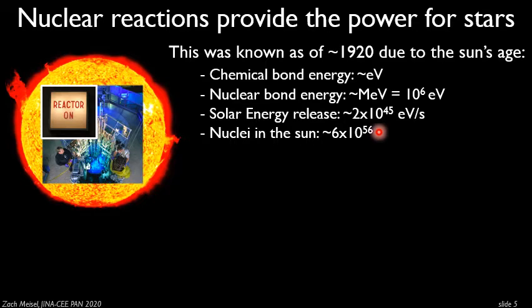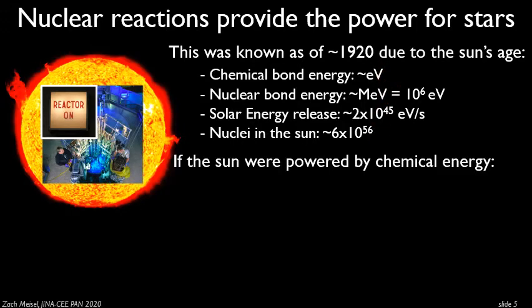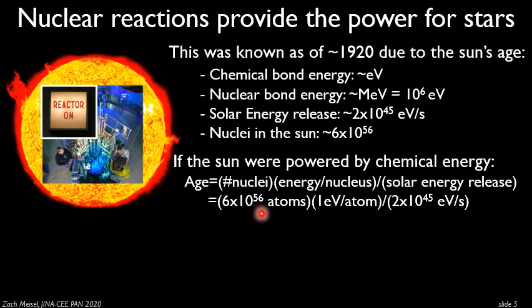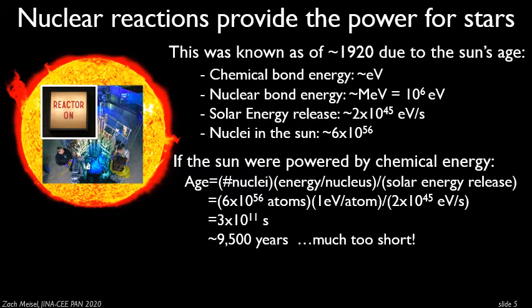Let's estimate how long the sun could live if it were just burning chemical energy. The age of the sun would basically be: how many atoms do you have, times how much energy is released per atom, divided by the solar energy release. With about 10 to the 56 atoms and about one electron volt per atom, divided by 2 times 10 to the 45 electron volts per second, you cancel out units and you're just left with time — you get about 10 to the 11 seconds, which is only around 10,000 years. If the sun were just burning like a fire in a fire pit, it would only be around for about 10,000 years.